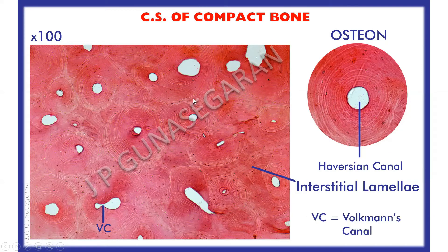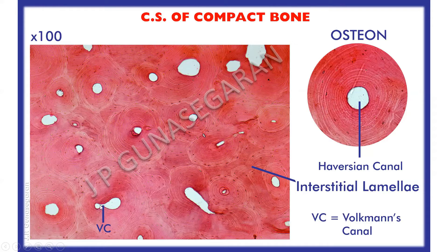This is a decalcified section of compact bone. In this process of decalcification, all the inorganic salts are dissolved to make the bone soft, sectioned with the microtome, and stained with hematoxylin and eosin. So this is a stained section, whereas the previous one was an unstained section. Even after decalcification, the general architecture of compact bone is preserved — you have the Haversian systems, the interstitial lamellae, and the Volkmann's canal connecting the Haversian canals.